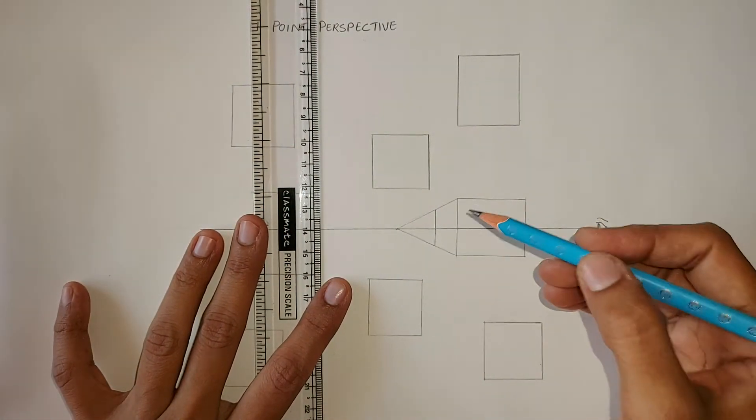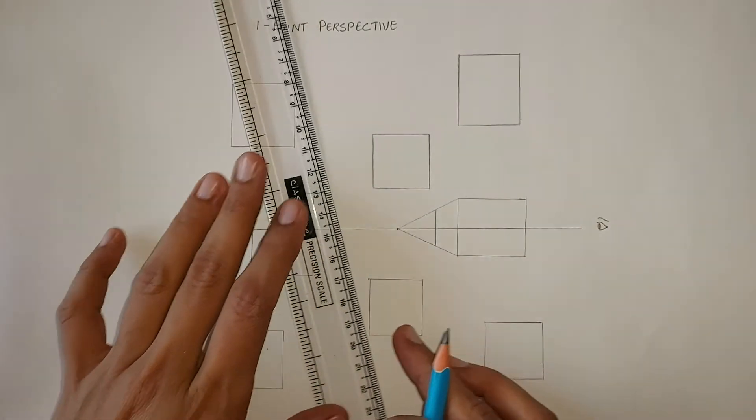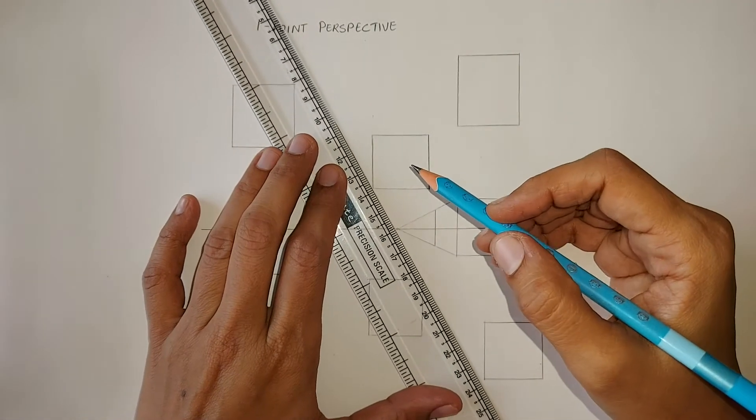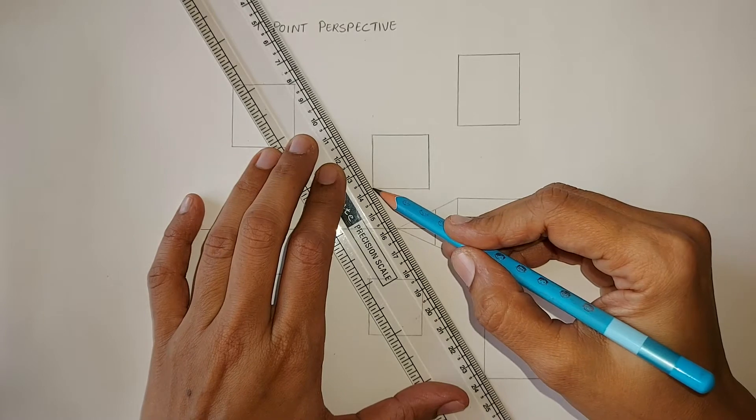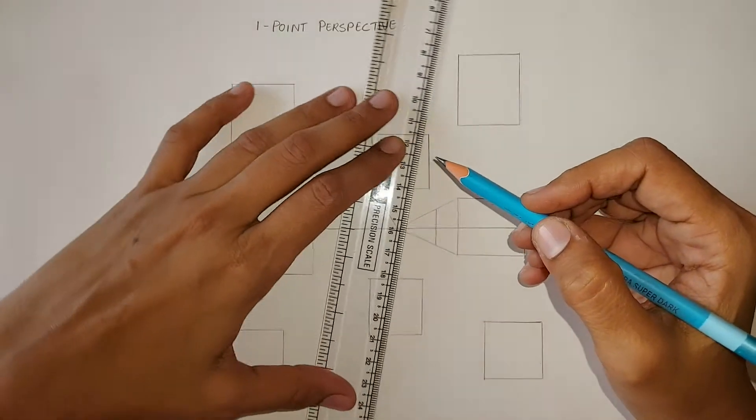Now, I have a box where I see two sides. So, that means if it is not the front face of your object, then it is going back into the space like this.